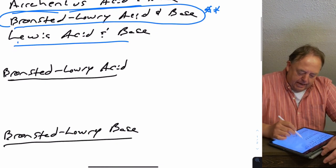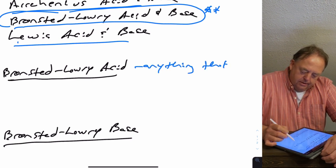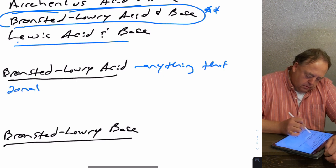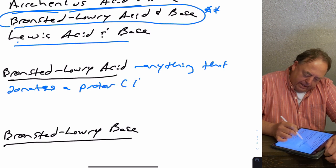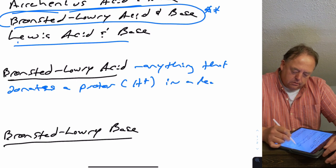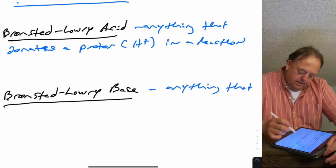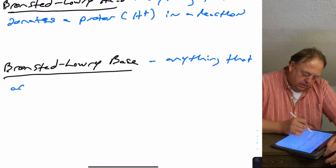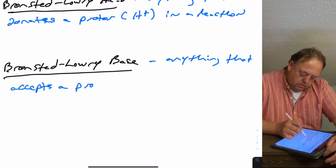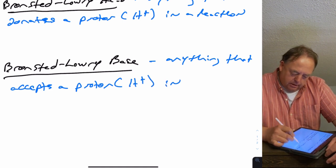A Bronsted-Lowry acid is anything that donates a proton, or an H+, or a hydrogen in a reaction. The base is the opposite — it's anything that accepts a proton, or H+, or accepts a hydrogen in a reaction.